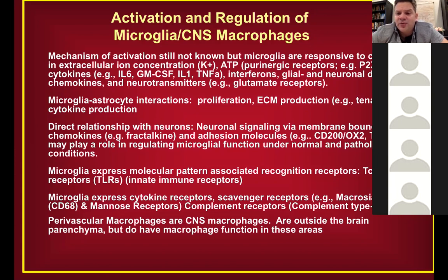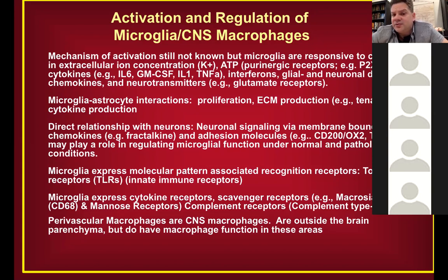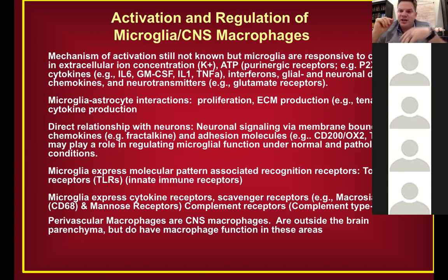Microglia, like other tissue macrophages, are activated by cytokines such as IL-6, IL-1, and TNF-alpha, which drive NF-kappa-B signaling. Interferons are also increasingly implicated in CNS infection, trauma, and disease. Microglia respond to glia- and neuronal-produced cytokines, chemokines, and neurotransmitters like high levels of glutamate — essentially responding to nearly everything in the local microenvironment.